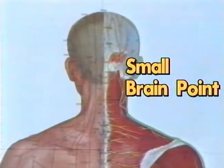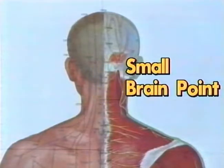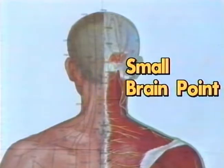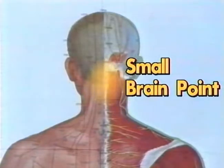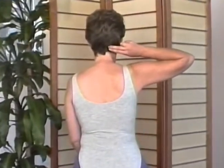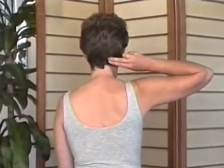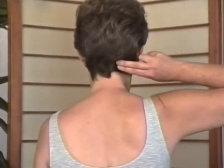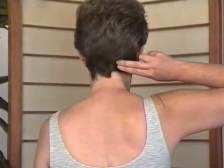The small brain point is located at the opening of the base of the skull above the first cervical vertebra. It is part of the cranial pump that draws spinal fluid and chi upward. The small brain point controls breathing, and when it opens, breathing pattern may change. When the small brain point is open, one feels inspiration. When blocked, one feels life is suffocating.